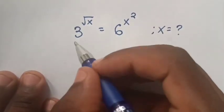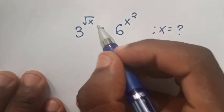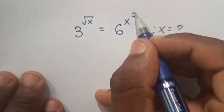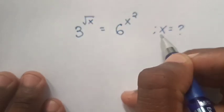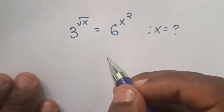Hello. How to solve 3 power square root of x is equal to 6 power x square — to find the value of x.